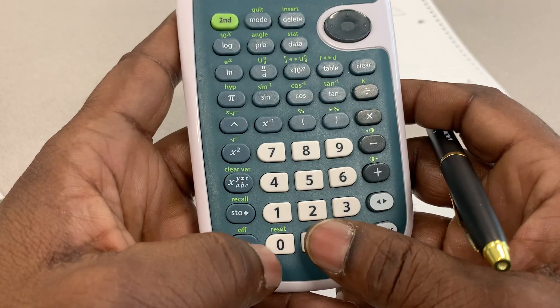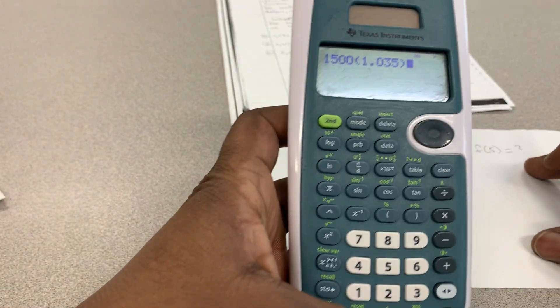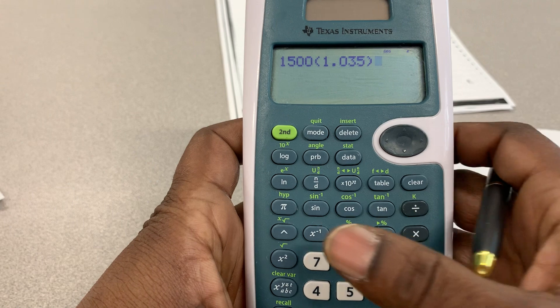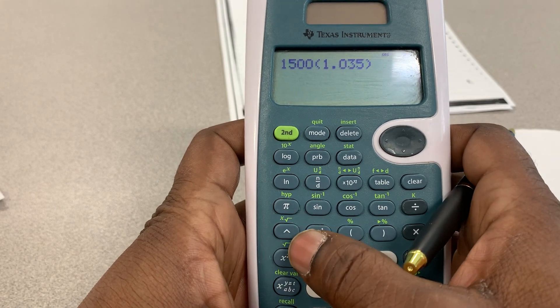Now, 1.035. 1.035. And then you're going to press this button right here, this upside down V.